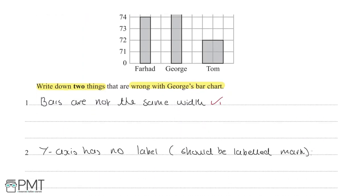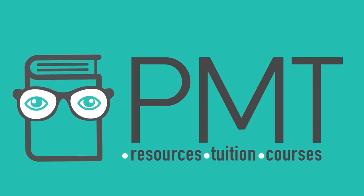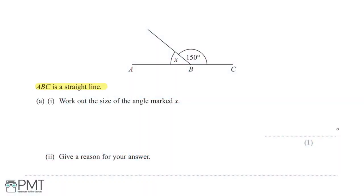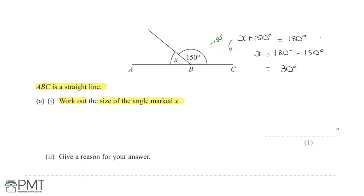ABC is a straight line and we are asked to work out angle x for one mark. Angles on a straight line sum to 180 degrees, so x plus 150 degrees equals 180 degrees. Therefore x equals 180 minus 150, which is 30 degrees. You get one mark for the correct final answer of 30 degrees.